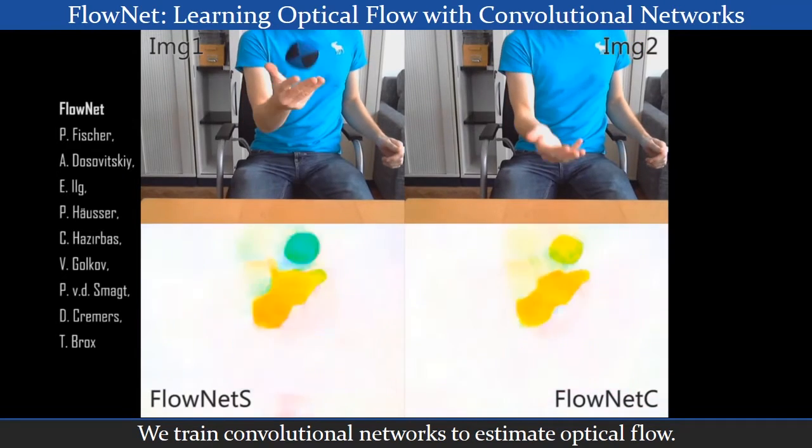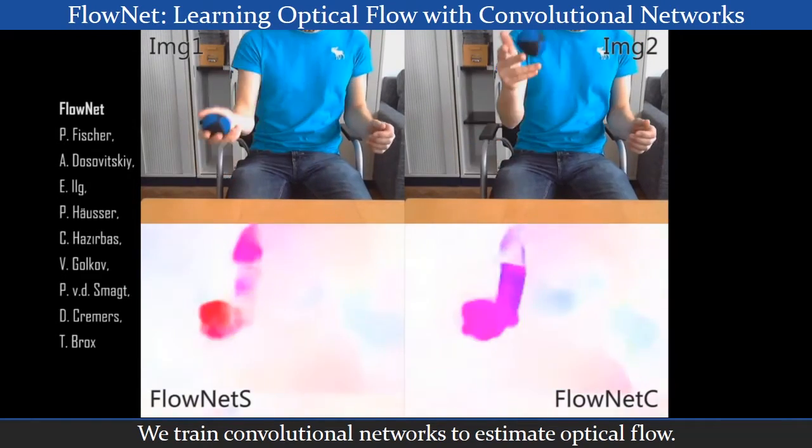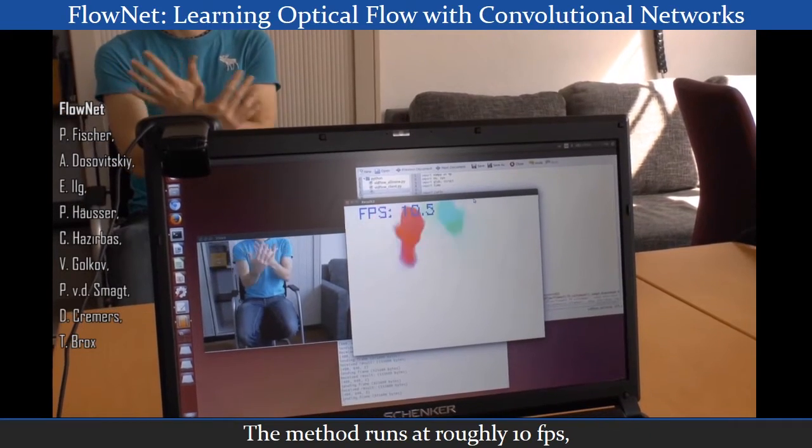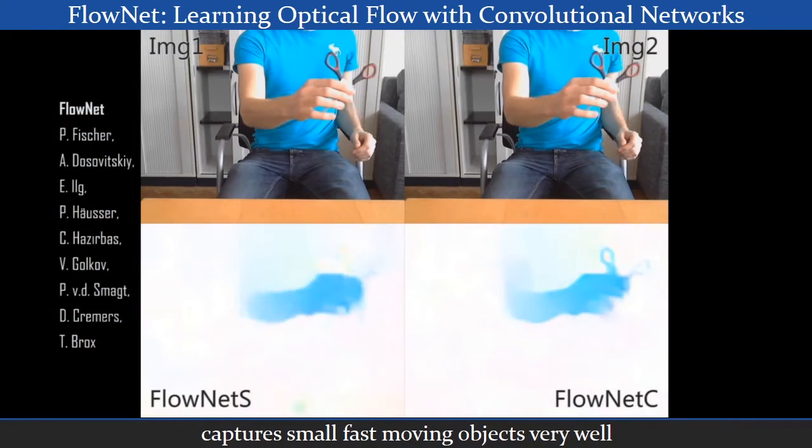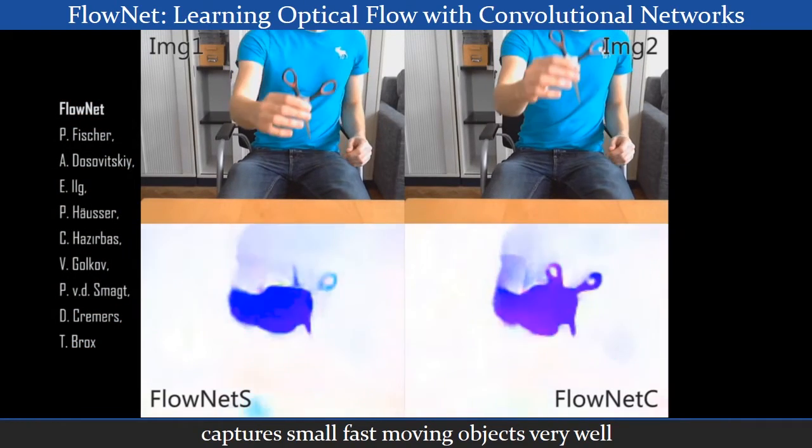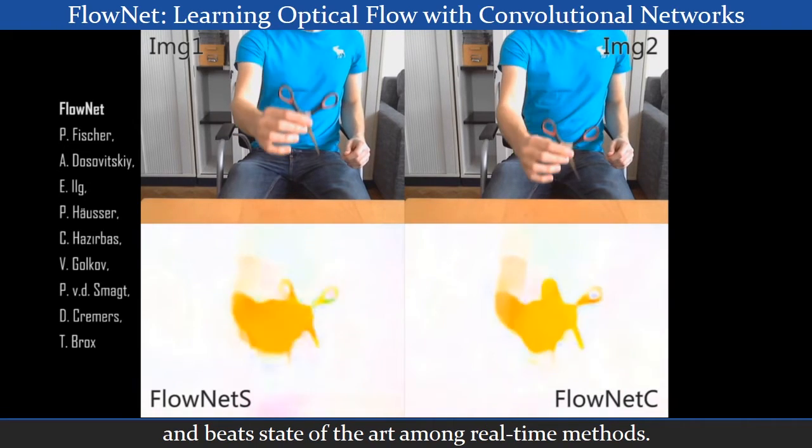We train convolutional networks to estimate optical flow. The method runs at roughly 10 frames per second, captures small, fast-moving objects very well, and beats state-of-the-art among real-time methods.